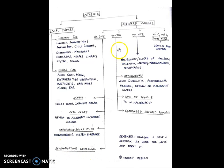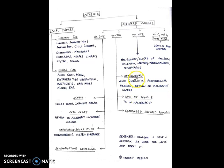The causes of otalgia due to conduction via the ninth cranial nerve include defects in the oropharynx such as acute tonsillitis, peritonsillar abscess, and benign or malignant ulcers in the oropharynx region. It can also be due to a defect in the base of the tongue, for example TB of the tongue or malignancy of the tongue, or it can be due to an elongated styloid process.